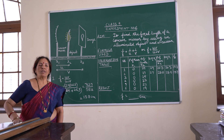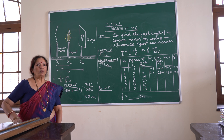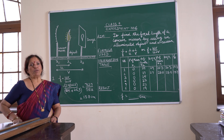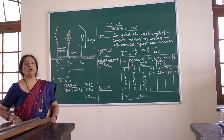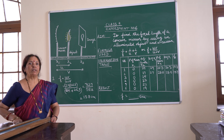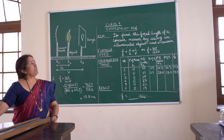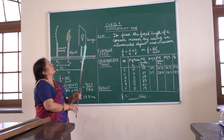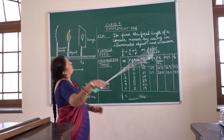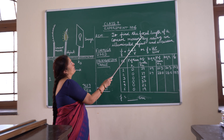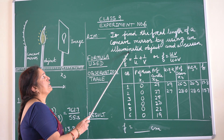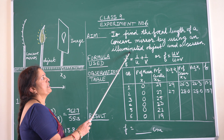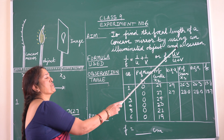Good afternoon boys, today I am going to explain how to perform experiment number six based on concave mirror. The aim of the experiment is to find the focal length of a concave mirror by using an illuminated object and a screen.